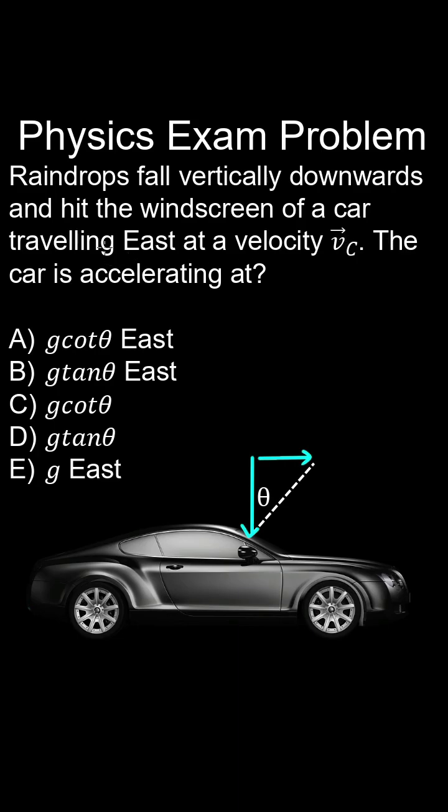And we're asked to find the acceleration of the car. So this appears to be a relative motion problem where the raindrop has a gravitational acceleration and the car has a horizontal acceleration.